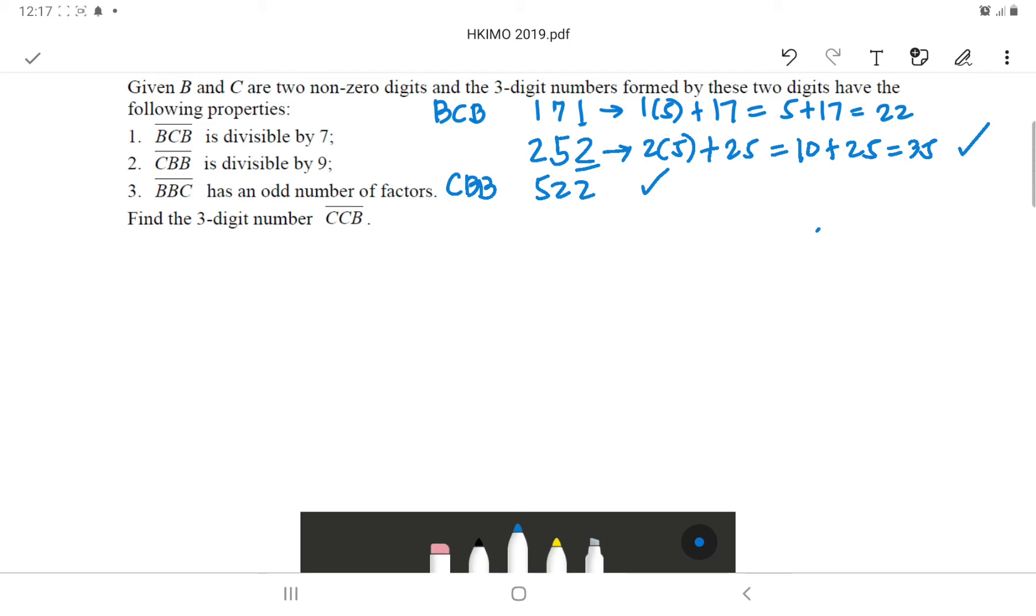Now let's proceed to the third condition. It says BBC, that is 2, 2, 5, has an odd number of factors. To get the number of factors, first you get the prime factors for 2, 2, 5. So let's use prime factorization. 2, 2, 5, you factor it using prime numbers. 2, 2, 5 is not divisible by 2. So proceed to 3. 225 is divisible by 3, and their quotient is 75.